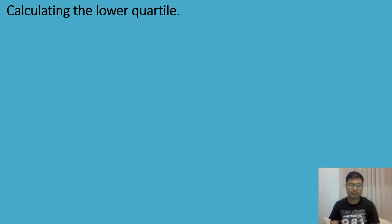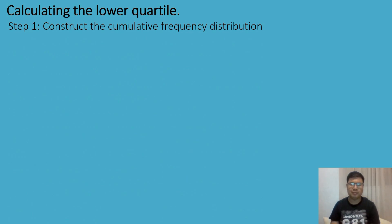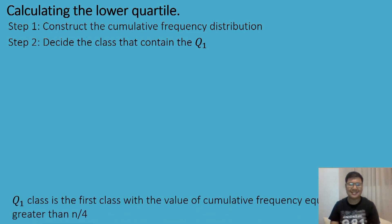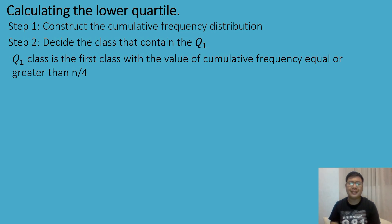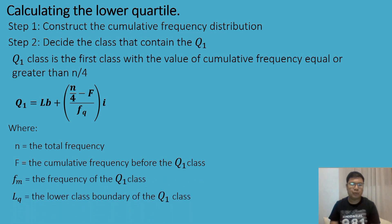Let's now discuss the steps on how to calculate the first quartile or the lower quartile. The first step is to construct the cumulative frequency distribution. Then, decide the class that contains Q1 — the quartile 1 class is the first class with a cumulative frequency equal to or greater than N over 4. The formula is: Q1 = lower boundary of the Q1 class + (N/4 − F) / f_m × i, where F is the cumulative frequency before the Q1 class, f_m is the frequency of the Q1 class, and i is the class width.